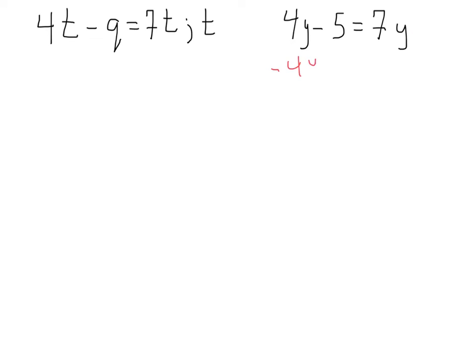Well, your first step in solving this one with just the one variable would be to get your variable to one side. So, to do that, I'm going to go ahead and subtract this 4y, subtract it on the right side as well. That's going to cancel, leaving me with negative 5 equals 7y minus 4y is 3y. And I can do the same exact thing here with our equation with more than one variable. Here, we have 4t minus q equals 7t. First, let's get our t's to one side. So, I'm going to subtract 4t from the left and subtract 4t from the right.